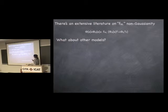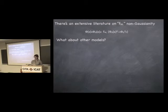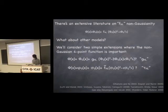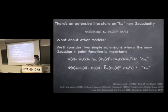The first extension is to consider, instead of just the quadratic term, a cubic coupling — I'll call that coefficient g_NL — which subtracts a piece to keep the mean and variance unchanged. The second case, which I'll call tau_NL, is where I have initial statistics given by the sum of two fields: one, phi, which is Gaussian, and a second field, sigma, which contributes a non-Gaussian piece with non-Gaussianity given by f_NL.